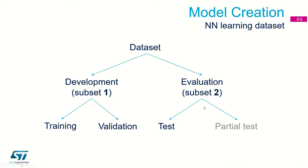This subset is split into two parts: the test data itself and the partial test. The size of the partial test is much lower than the final test for practical reasons. For example, when testing the neural network running on a microcontroller, we use a virtual COM port over USB as the communication channel. The bandwidth of USB is limited, so it would not be practical to send gigabytes of data. That's why we define a partial test of a few megabytes.